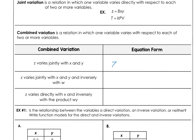If z varies jointly with x and y, we write that as z equals k times x times y. If z varies jointly with x and y and inversely with w, that inverse relationship means division, so z equals k times x times y divided by w.